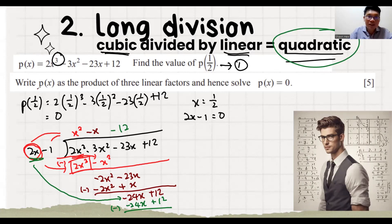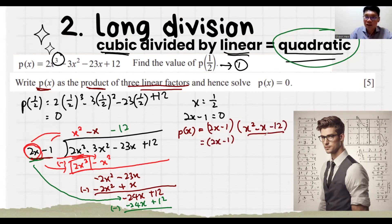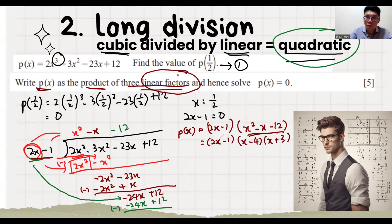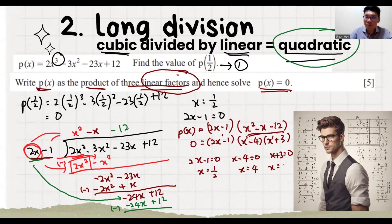This question asks us to write p(x) as a product of 3 linear factors. We know the first factor is 2x minus 1. From long division we get x squared minus x minus 12, which we can factorize into (x minus 4)(x plus 3). So p(x) is written as three linear factors with x to the power 1 each. Then they ask us to solve: 2x minus 1 equals 0, or x minus 4 equals 0, or x plus 3 equals 0. So x equals ½, x equals 4, or x equals minus 3.